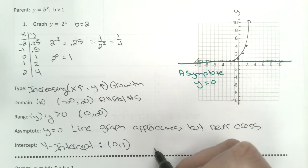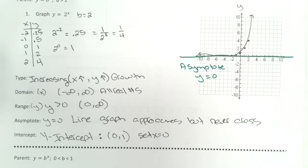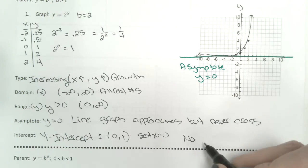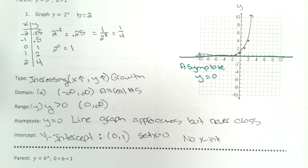You can always find a y-intercept by setting x equal to 0. And there is no x-intercept because it doesn't cross the x-axis.